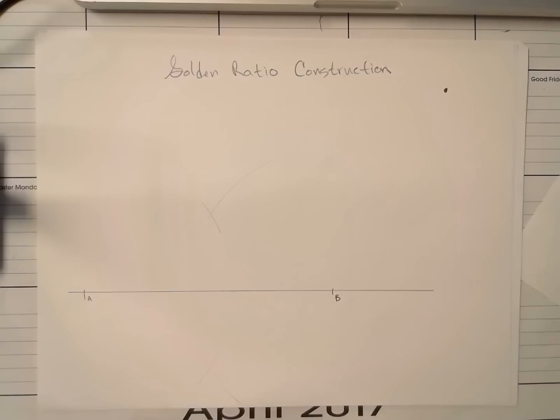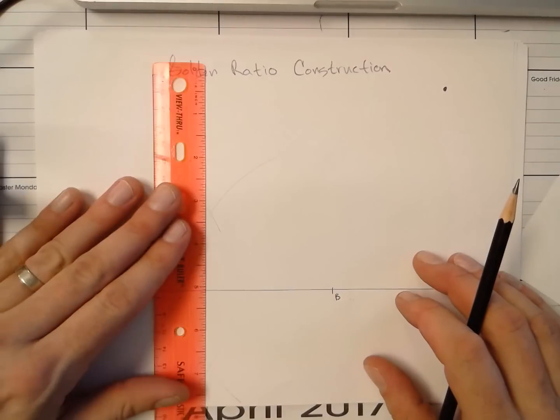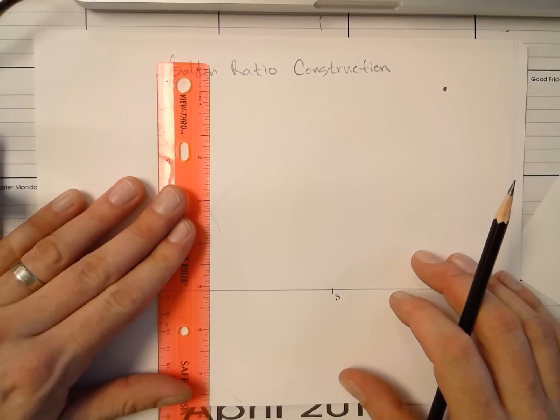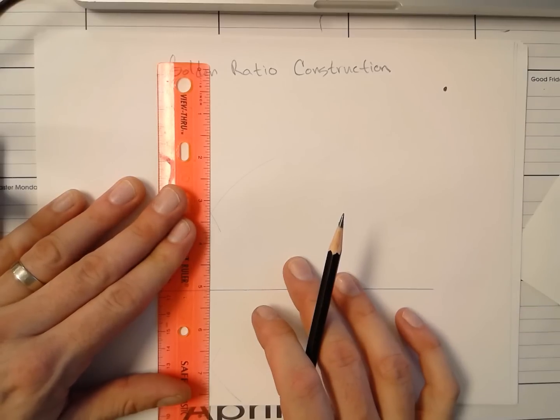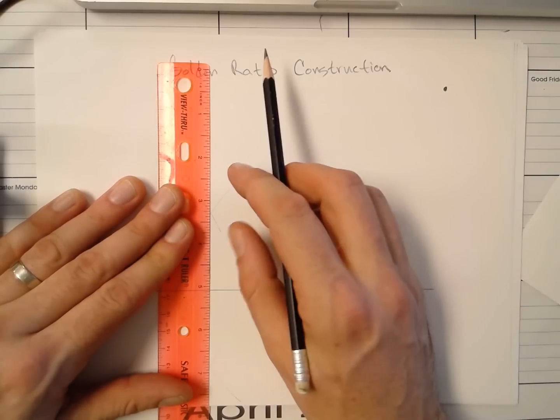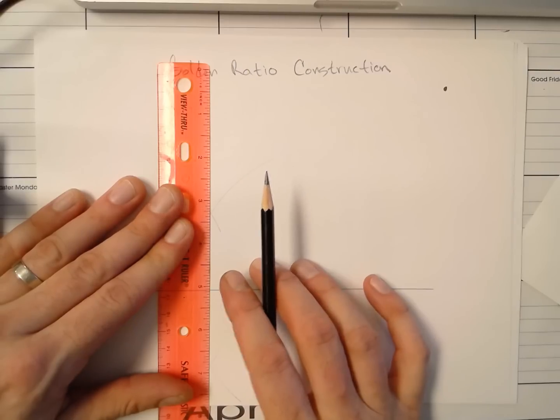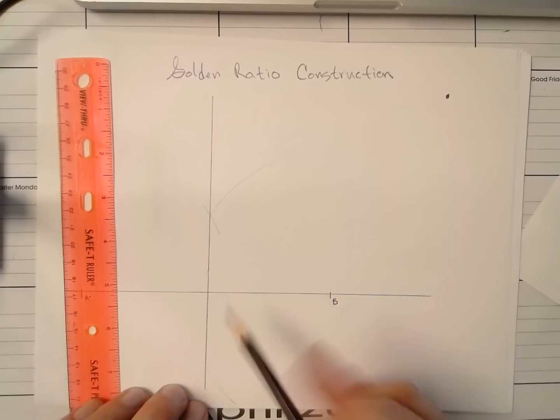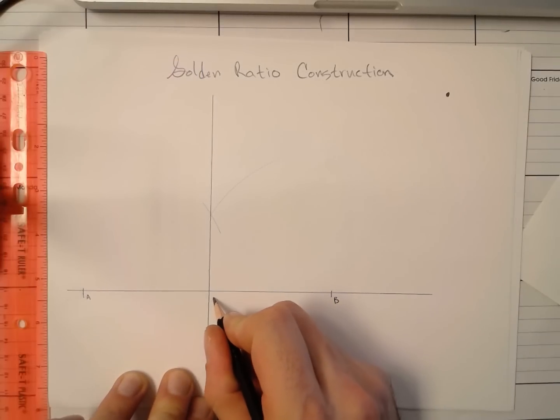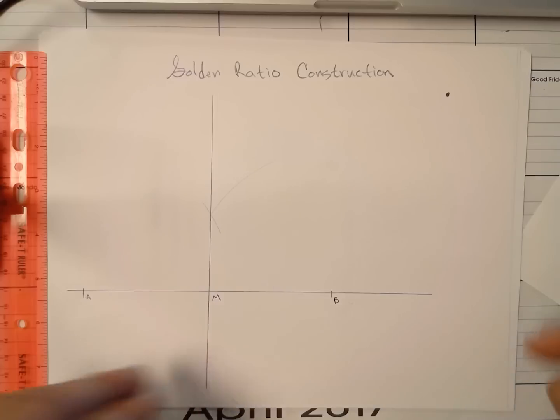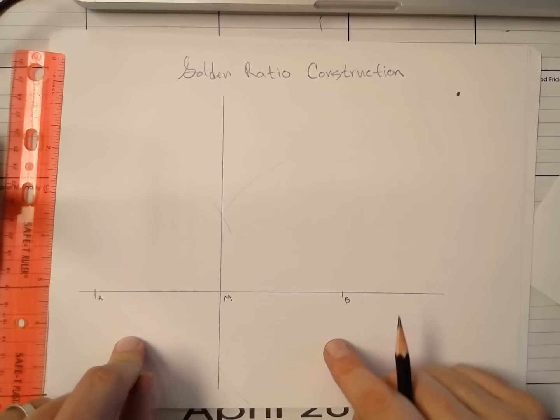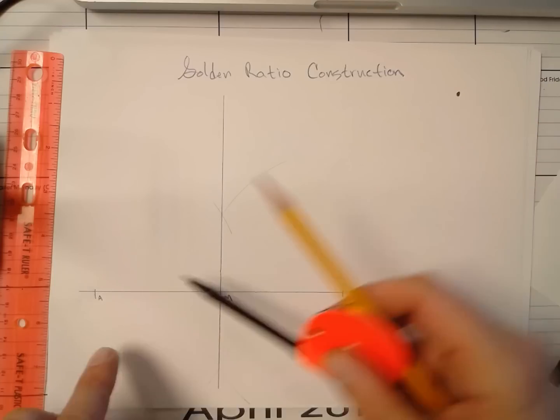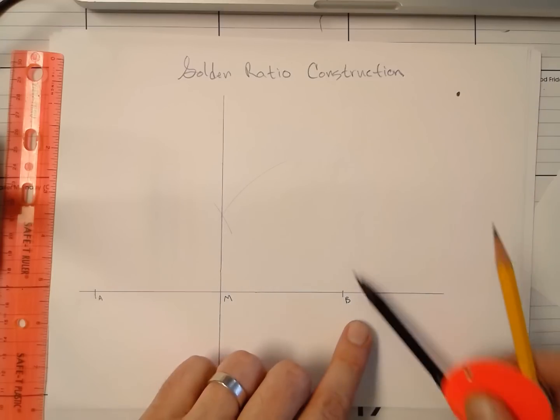Next, take your straight edge and connect those two intersection points with your straight edge and that will give us as accurate as possible. That intersection will be point M. Now that we've bisected AB, the next thing that we're going to want to do is construct a perpendicular segment perpendicular to AB that goes through point B.